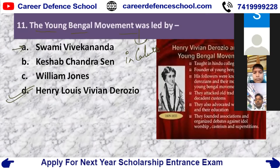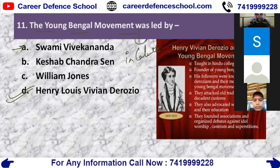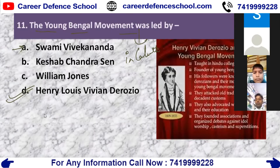Swami Vivekananda, also known as a yoga philosopher to the Western world, lived from 1863 to 1902. He was a Hindu philosopher and social reformer who attempted to incorporate Christian theology. William Jones served as a judge of the High Court at Calcutta, became a student of ancient India, and founded the Asiatic Society of Bengal.